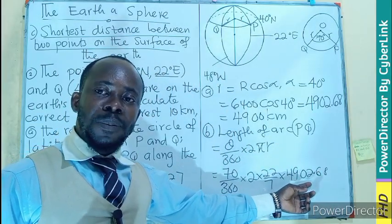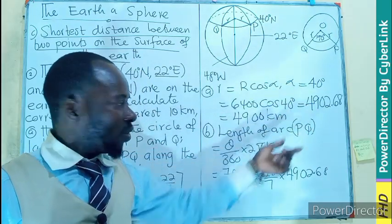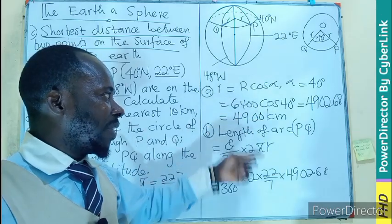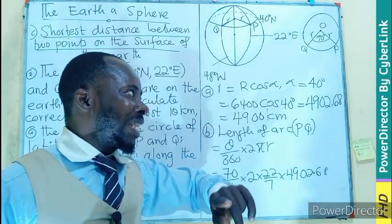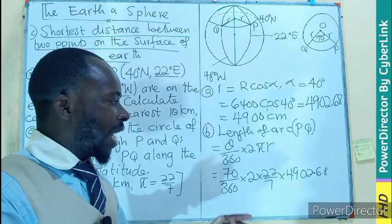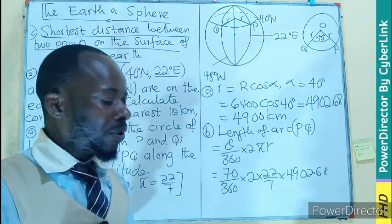Remember, I am using the actual measurement or actual distance, not the approximated one. This is what we are approximating. But the actual measurement is 4,902.68. So let's use that in the calculation before we approximate to the nearest 10,000.